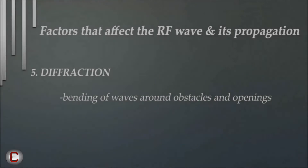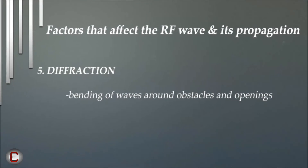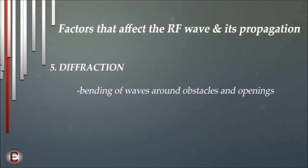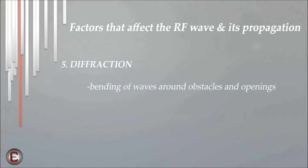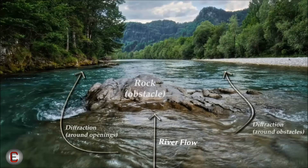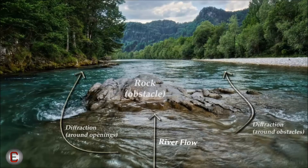On the other hand, diffraction is the bending of waves around obstacles and openings. A good analogy is a partially submerged rock lying in the middle of a riverbed. The water moves around the rock, therefore displaying a diffractive pattern. Partial blockage of the RF signal usually causes diffraction.